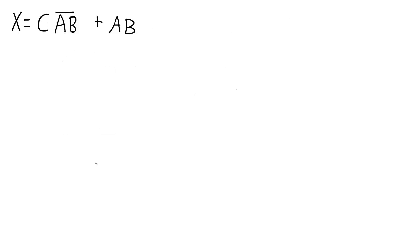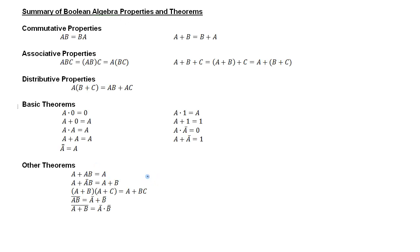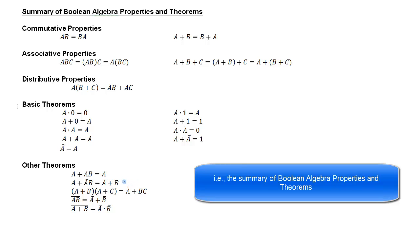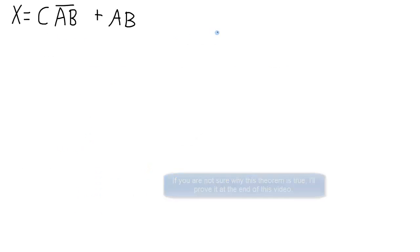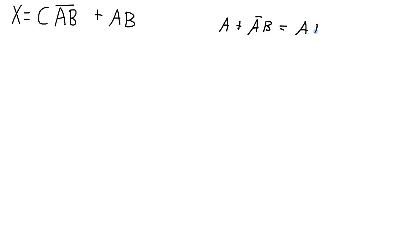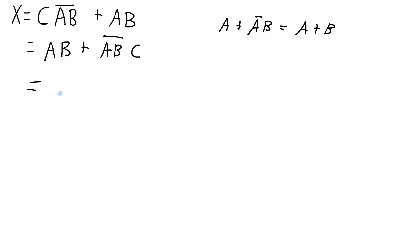Looking at this expression, it might not be so obvious how you would simplify it. However, if you go back to the summary, the expression we are trying to simplify follows a known form — so it's actually just a one-step simplification. Taking the idea that a ORed with NOT(a)b equals a OR b, we can recognize the pattern. This expression has a slightly different form: we've got ab OR NOT(a) AND c, where ab is analogous to a, and c is analogous to b. So overall, this expression simplifies to ab ORed with c.